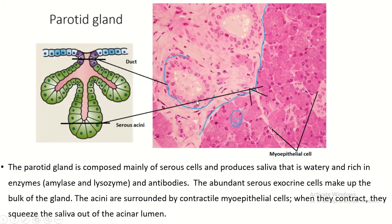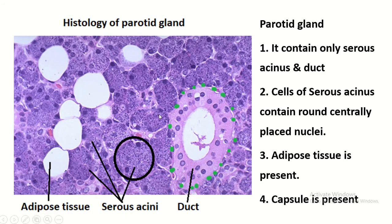The duct is formed by simple columnar epithelium. This is the serous acini and serous acini cell. At the periphery of the serous acini is the myoepithelial cell. Contraction of this myoepithelial cell pushes the saliva out of the acinar lumen. The identifying points of the parotid gland: the parotid gland contains only serous acini and ducts.